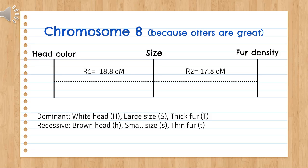The recombinant distance between head color and size is 18.8 centimorgans apart, and size and fur density are 17.8 centimorgans apart.